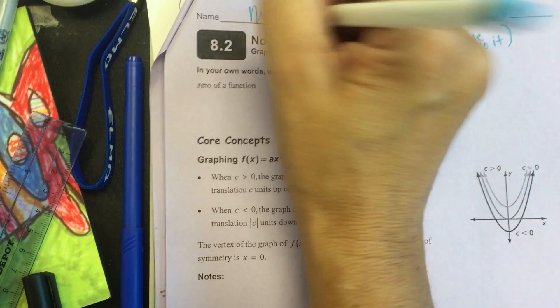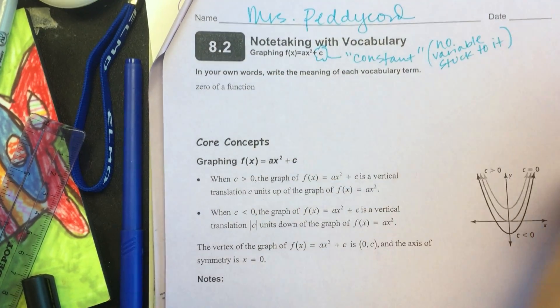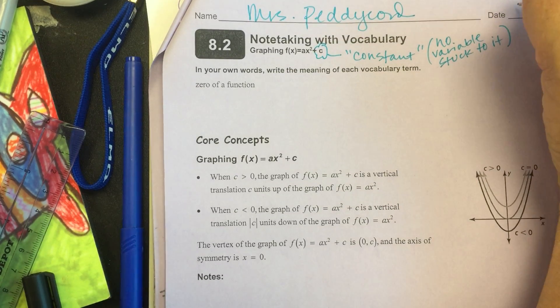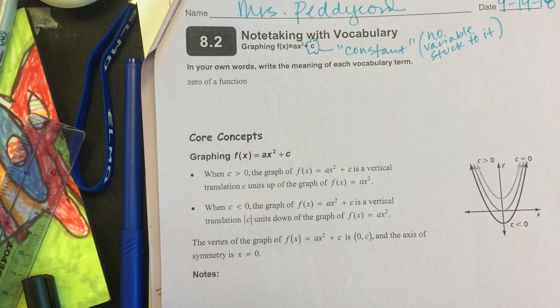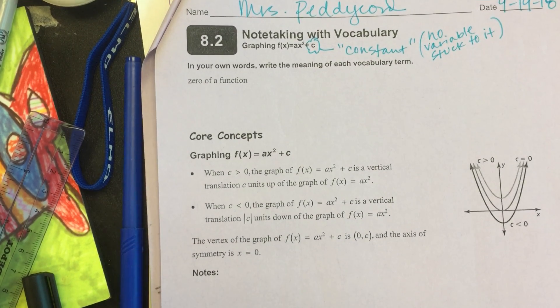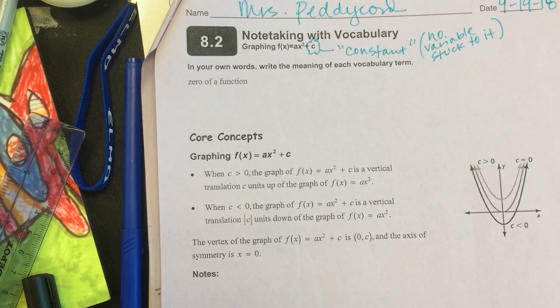We were just in our exploration of 8.2. We kind of get an idea about what that plus C does to the parent function. Today's the 19th, if you didn't put that up there. I like to just keep dates on here so if somebody's absent, I can go back and say this is what you need from that day. We're still investigating graphing our parabolas.